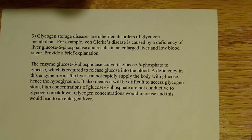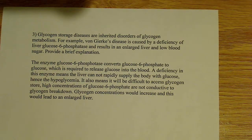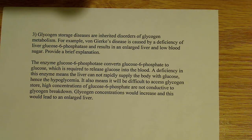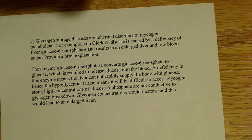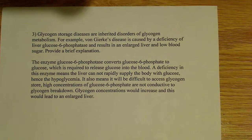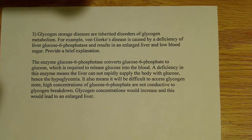In my prepared answer, and this is how I would answer it on exams, the enzyme glucose 6-phosphatase converts glucose 6-phosphate to glucose. It's the final step of the gluconeogenesis pathway, so it's required to release glucose into the blood. If you don't have this enzyme working properly, you're not going to release glucose into the blood when you need it.